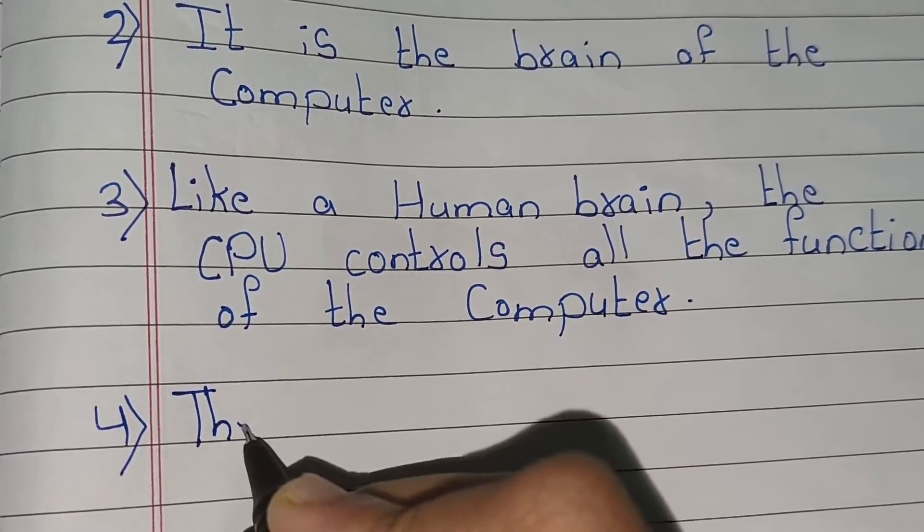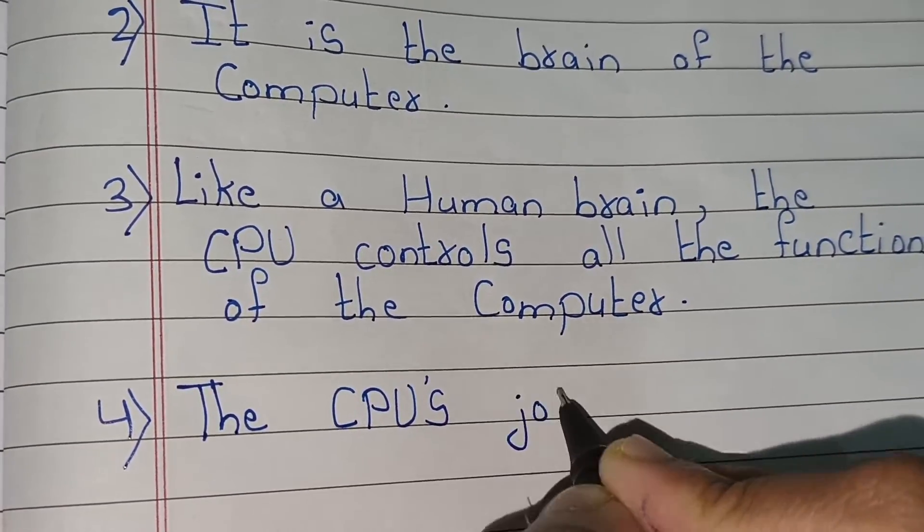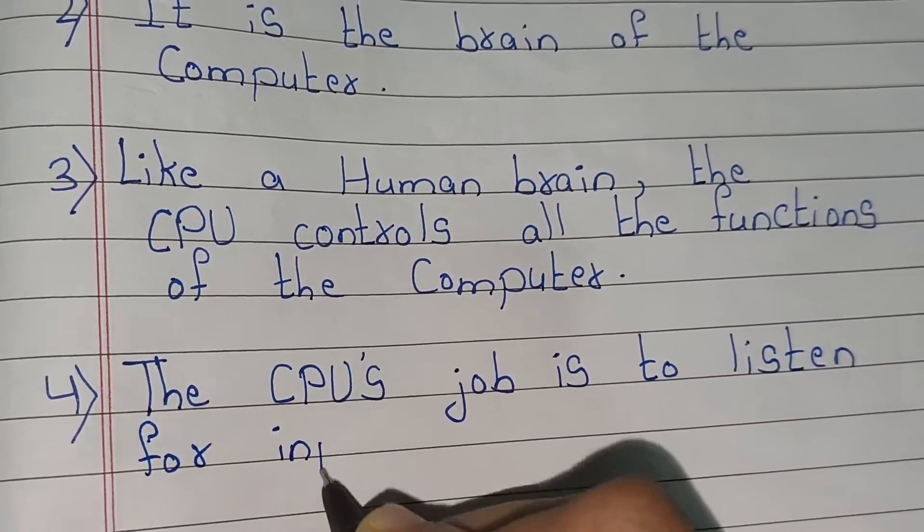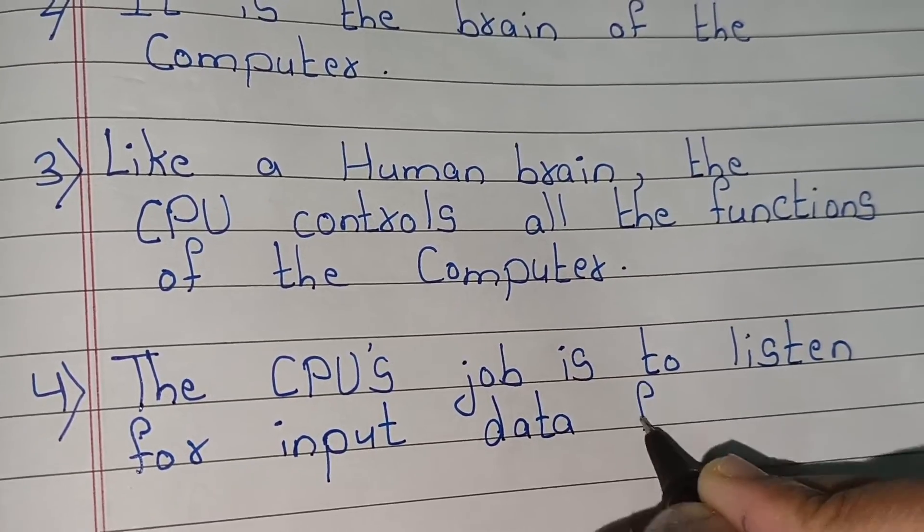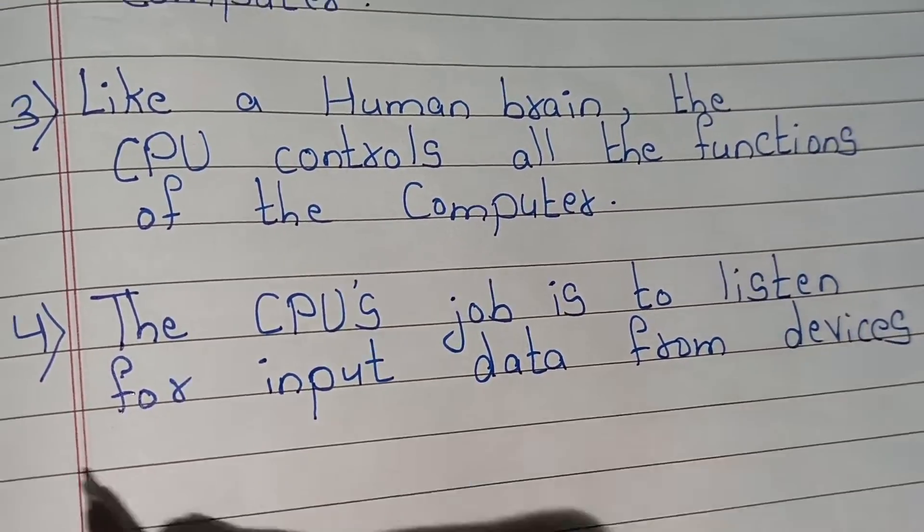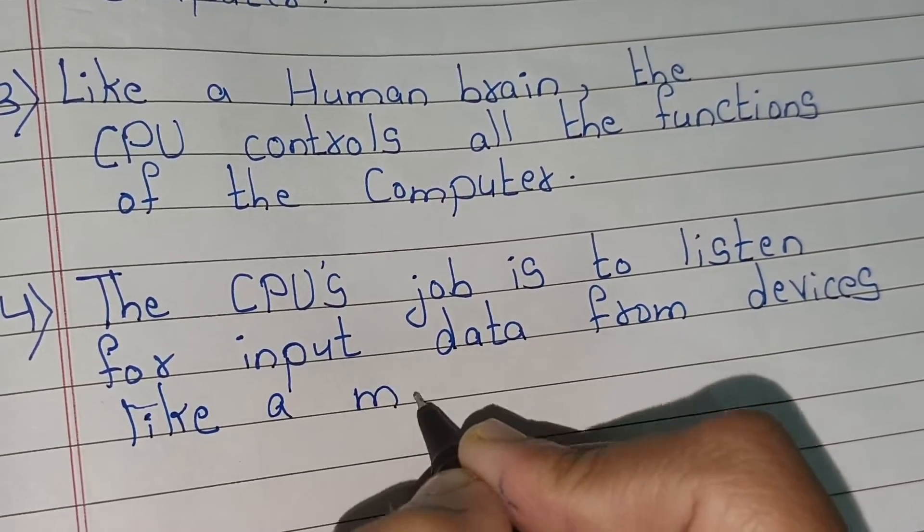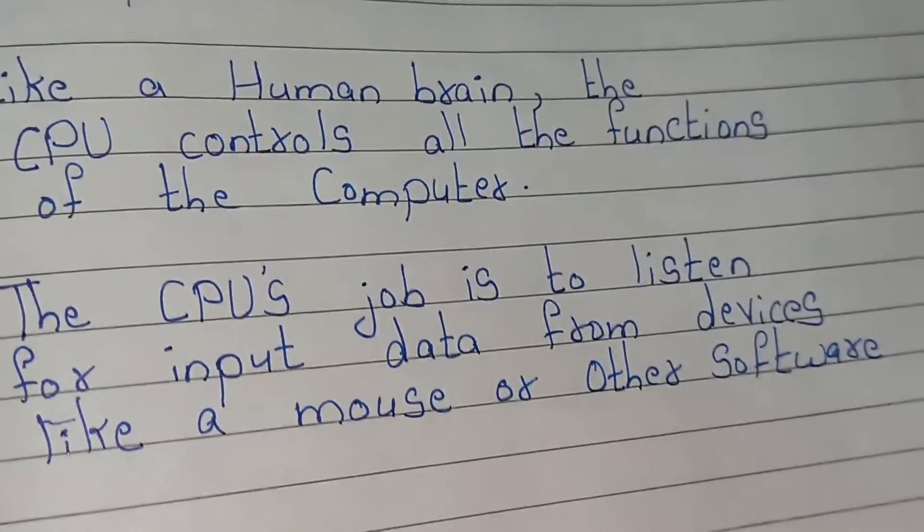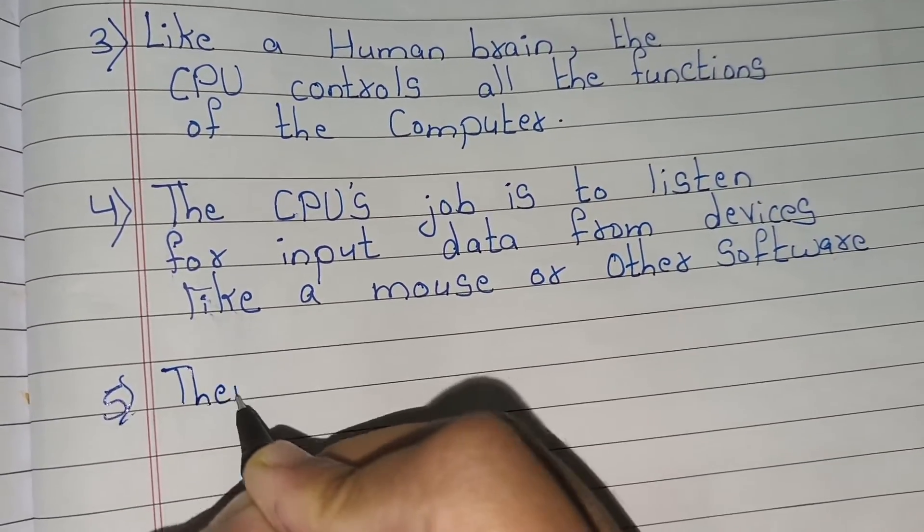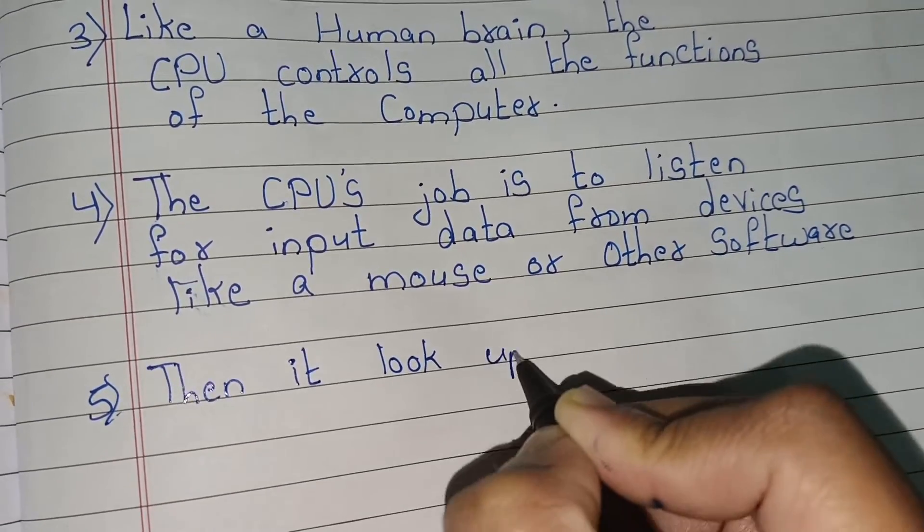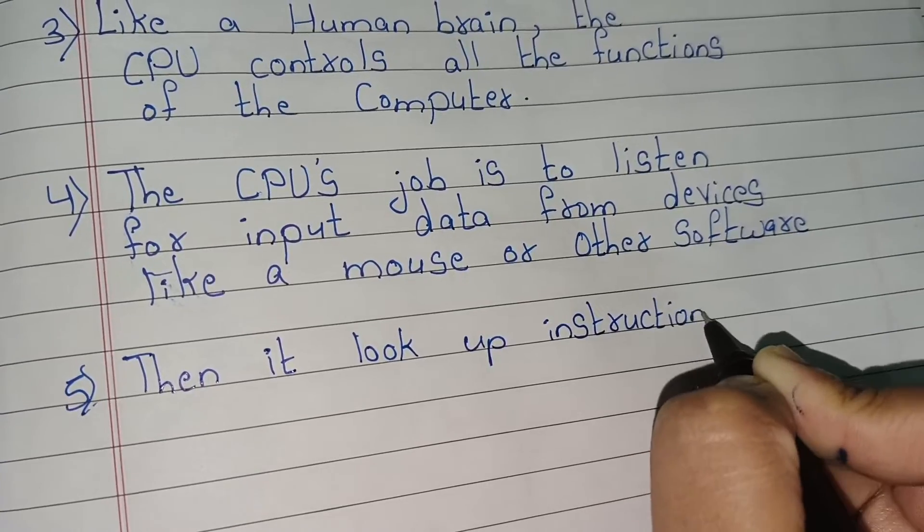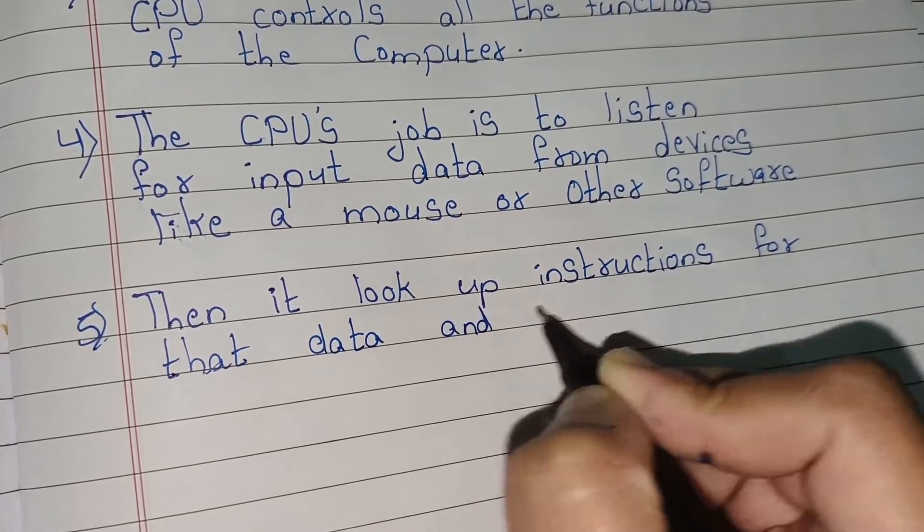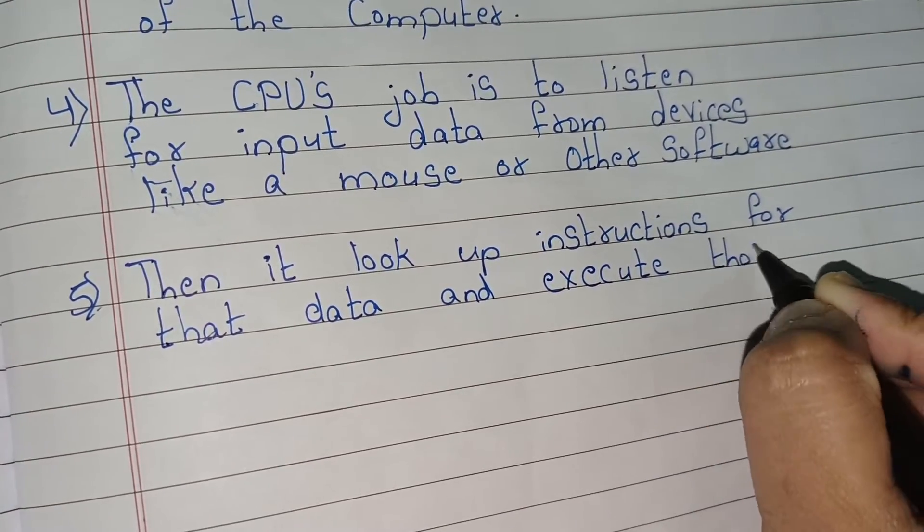The CPU's job is to listen for input data from devices like a mouse or other software. Then, it looks up instructions for that data and executes those instructions.